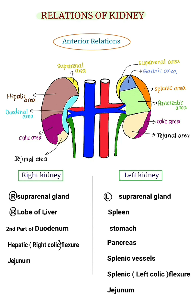Left kidney anterior relations: left suprarenal gland, spleen, stomach, pancreas, splenic vessels, splenic or left colic flexure, jejunum.